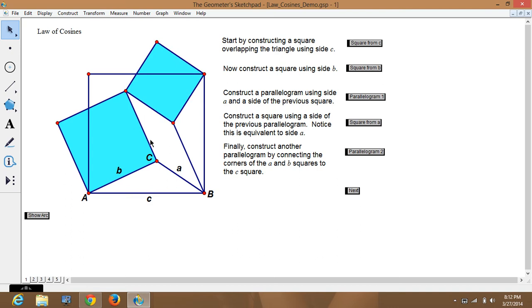We're going to color it blue because it's a square, but it's off of A. Instead of doing it off of here, we're going to do it off of here, but it's A right here. And then we're going to construct another parallelogram by connecting the corners of A and B square.